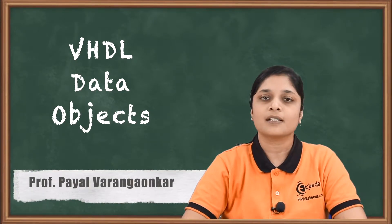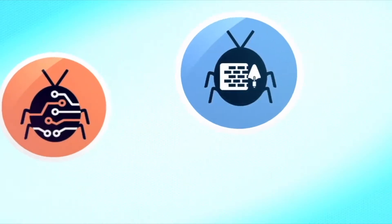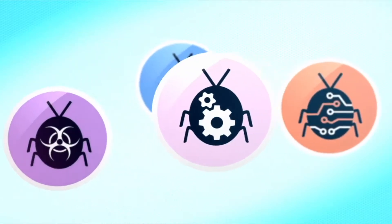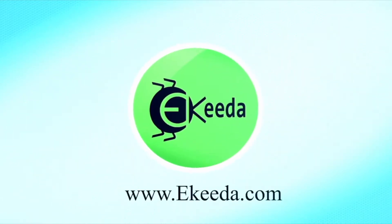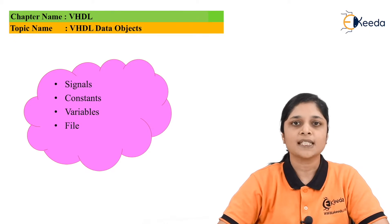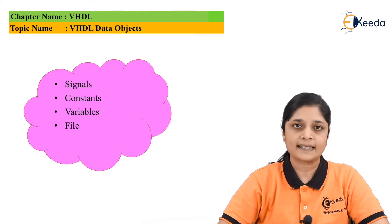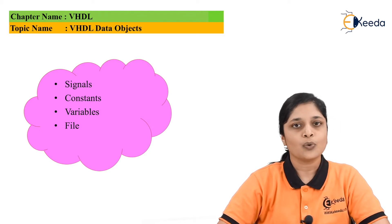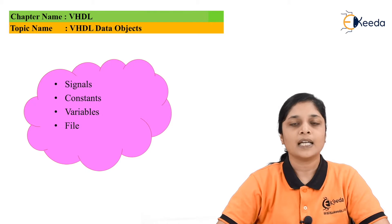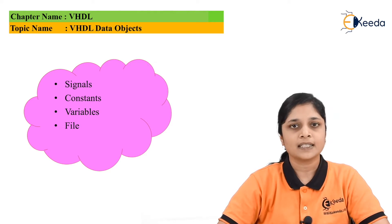Let's start with the discussion. The first VHDL data object is signal. Signal is used to hold the list of values. It includes the current value and the number of future values. If there is a requirement of defining a signal, then you can use the signal data object directly while coding the program.